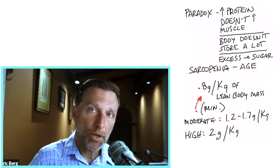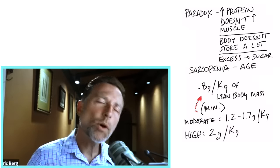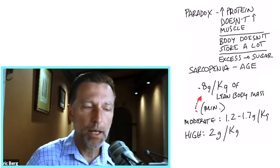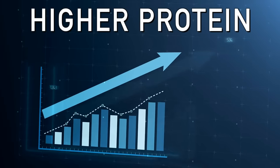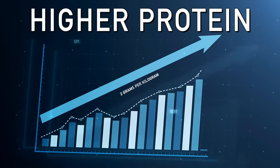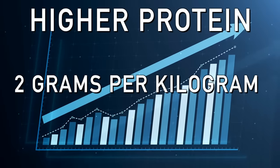Now, a moderate amount of protein could be between like 1.2 and 1.7 grams per kilogram of lean body weight. And then when we get into higher protein, that's roughly about like two grams per kilogram of lean body weight.